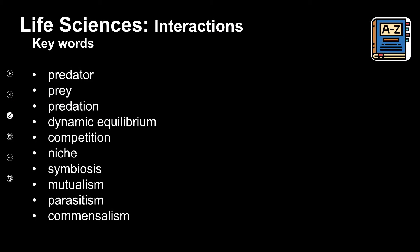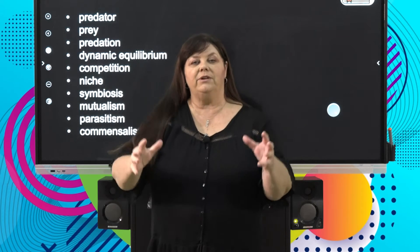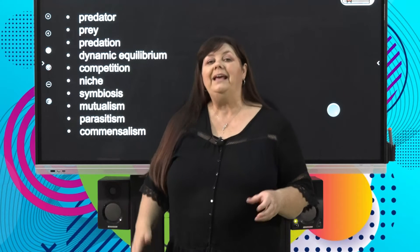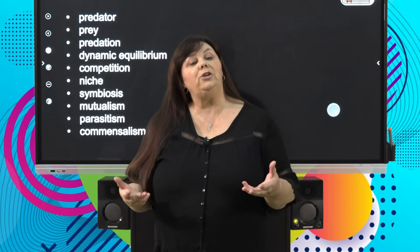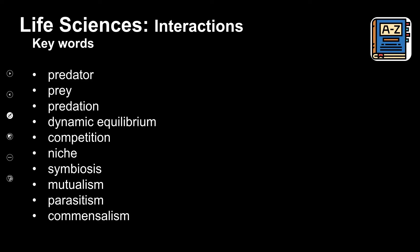Are you ready for our keywords? Remember that keywords are useless if just thrown at you as definitions. Let's learn about them in context, but also put them into a glossary where you can refer to term and definition when studying. The terms we're looking at today: predator, prey, predation, dynamic equilibrium, competition, niche — spelled N-I-C-H-E but pronounced 'niche' — symbiosis, mutualism, parasitism, and commensalism.